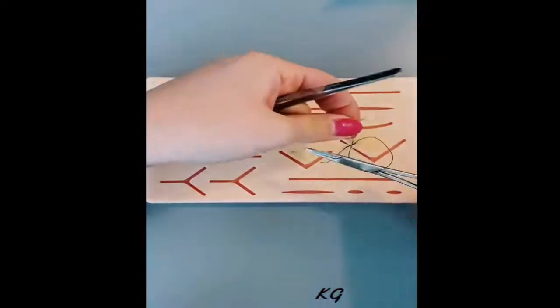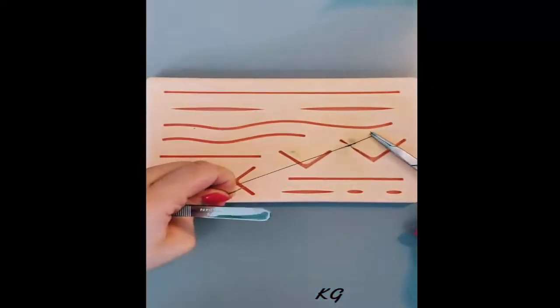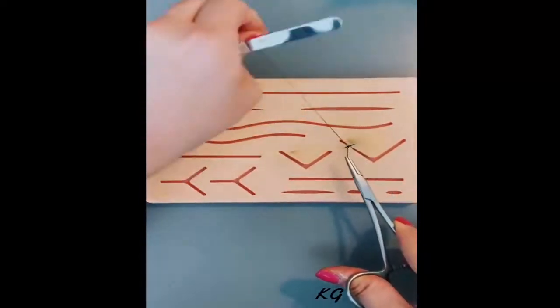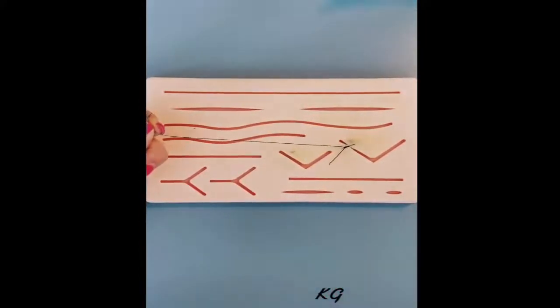Now in the opposite direction you make a single loop, grab that suture tail, lay it down flat. And then in the same direction that you started, single loop, grab that tail, lay it down flat. That's it. Now you cut, and you're done.